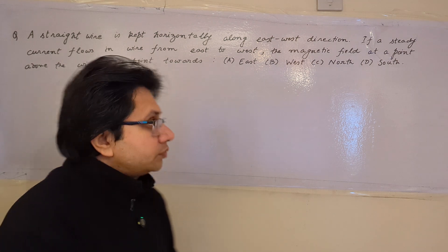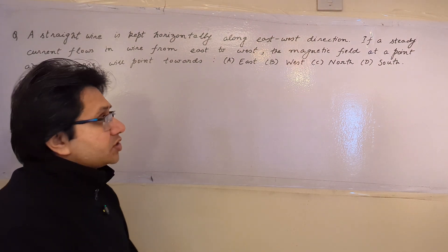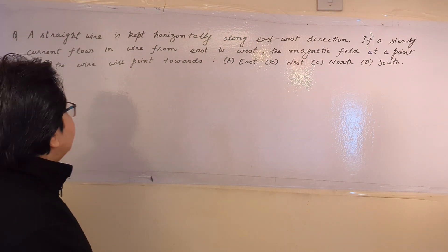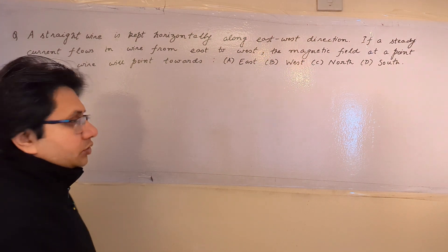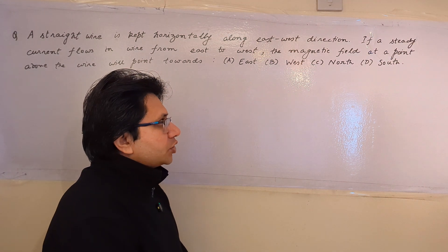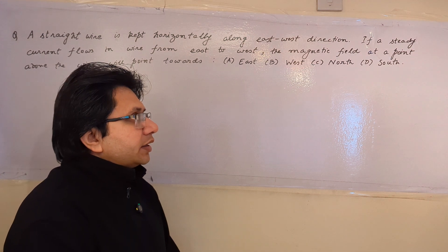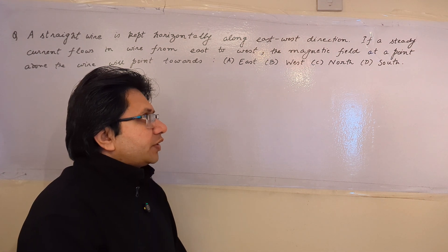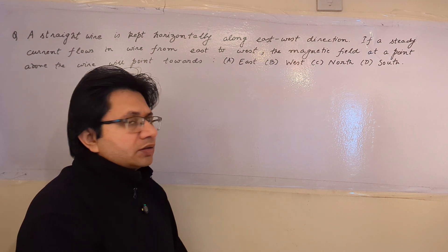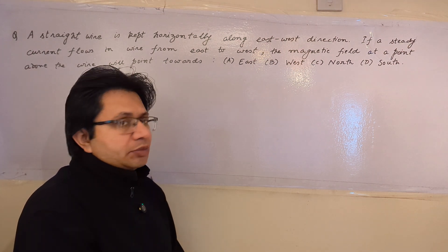A straight wire is kept horizontally along the east-west direction. If a steady current flows in the wire from east to west, the magnetic field at a point above the wire will point towards which direction? Option A: east, Option B: west, Option C: north, Option D: south. This problem is based on a current-carrying wire that generates a magnetic field, and we need to find the specific direction of that magnetic field.